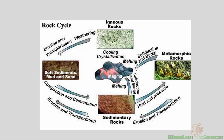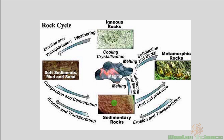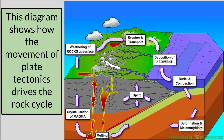This next diagram shows a bit more detail and really illustrates how the cycle works with heat and pressure. You go from sedimentary to metamorphic, or from igneous to metamorphic. For sedimentary rocks, it always takes weathering and erosion to become sediment, and then compaction and cementation to become a sedimentary rock. For igneous rocks, it's always melting and cooling. This diagram really shows how the movement of plate tectonics drives the rock cycle.